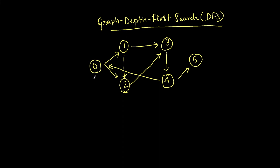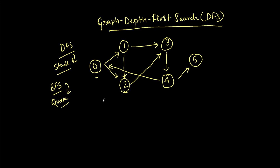Let's discuss how we can solve this using the same example graph. Whenever we talk about DFS, it uses a stack. Similarly, when we talk about BFS, it uses a queue. So: DFS uses a stack, BFS uses a queue. We'll take a stack here. We are starting with zero as our root, so first we'll add zero to the stack.